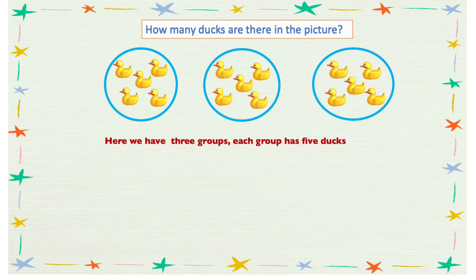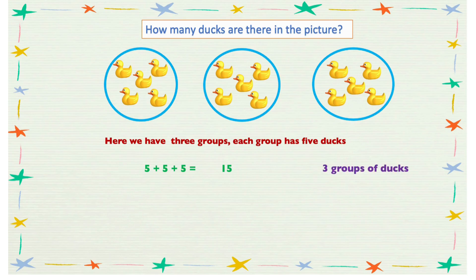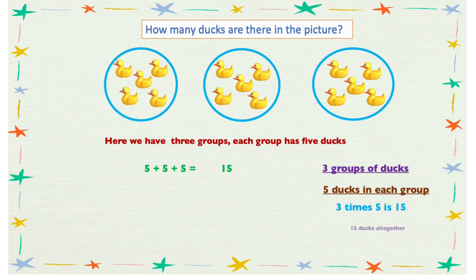Here we have three groups of ducks, and in each group we have five ducks. So we can do five plus five plus five, and this gives us 15. But since we are repeatedly adding five, we can do this an easier way using multiplication: three groups of ducks times five ducks in each group gives us 15 ducks all together.